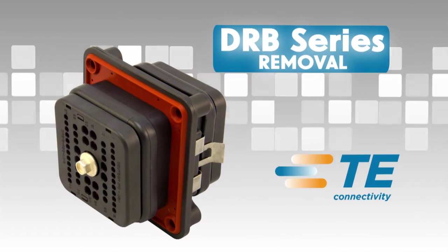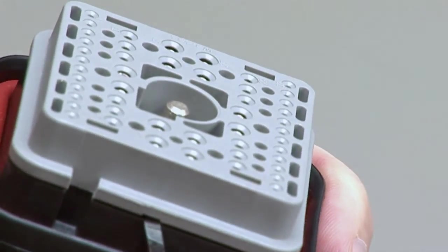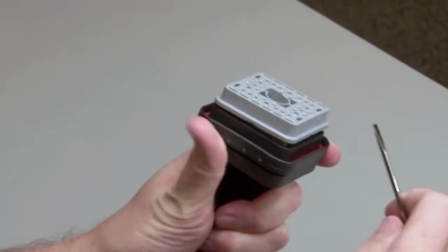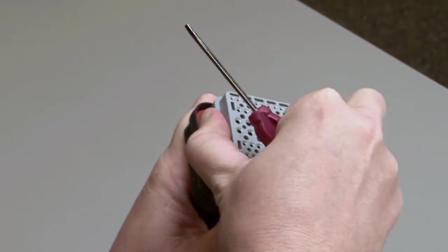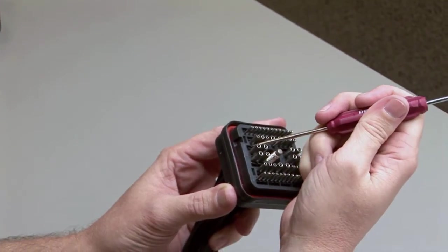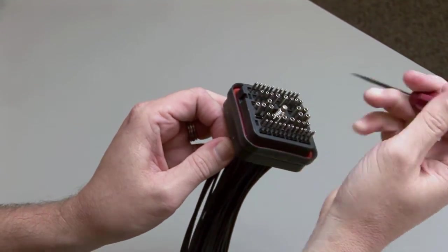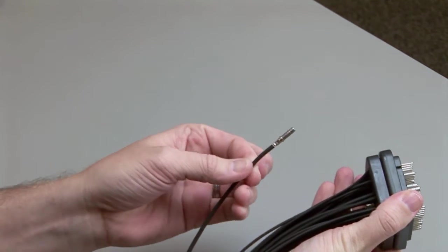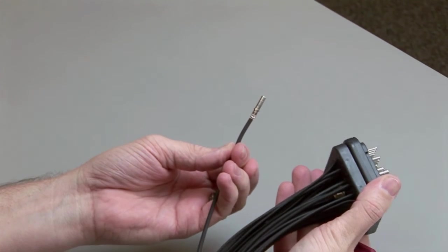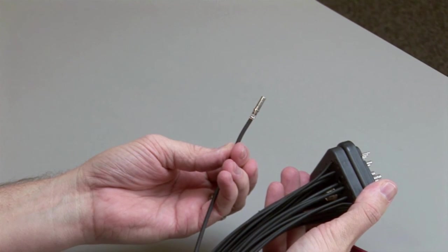DRB contact removal. Remove the wedge locks by using a screwdriver. Pull the wedge locks straight out. To remove the contacts, release the locking finger by moving it away from the shoulder of the contact with a screwdriver, while at the same time gently pulling the wire through the rear grommet or wire router.